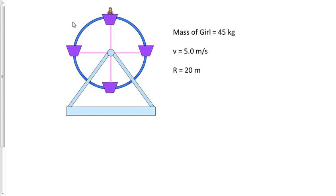We want to find the normal force acting on the girl, or the total force acting on the girl from her chair inside the Ferris wheel. We want to do it in three locations: at the top of the circle, at the bottom of the circle, and at the side of the circle.